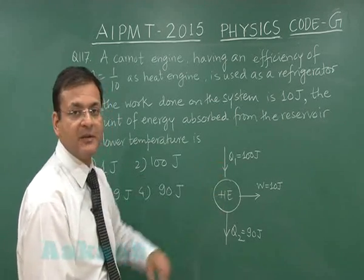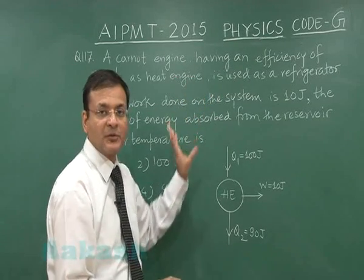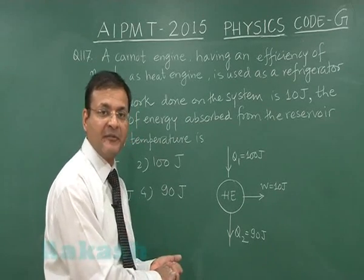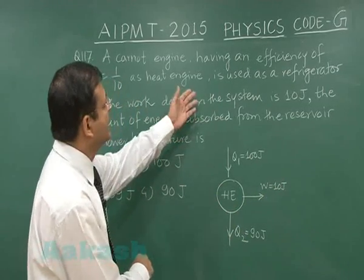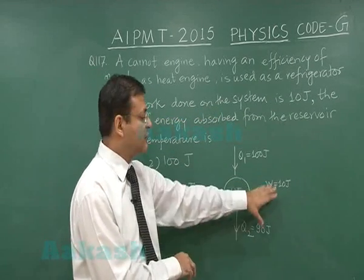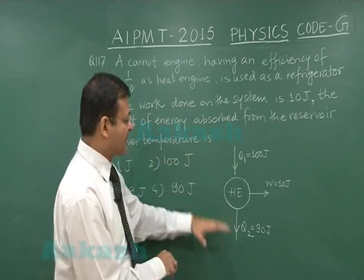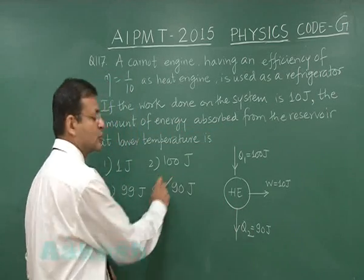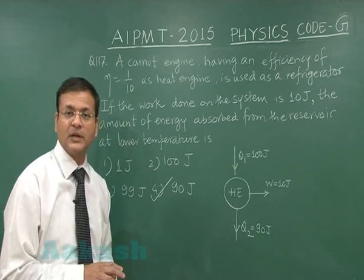If used as a refrigerator, every process is reversed but values remain the same. The heat rejected to the atmosphere is no longer useful; the heat taken out from the ice box is the cooling part; and the work input is 10 joules. Since work done on the system is 10 joules, the energy absorbed from the lower temperature reservoir is simply 90 joules. Therefore option four is the most appropriate answer for question 117.